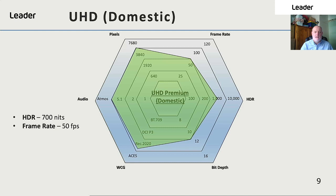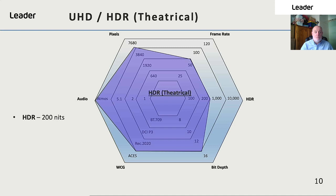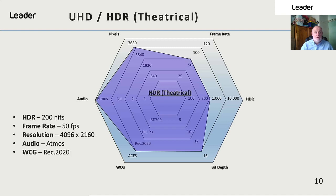When we move to the UHD standards, HDR on average is between 500 and 700 nits, but there are now consumer displays that will go to 1000 nits. We have 50 frames per second, a resolution of 3840 by 2160, audio 5.1, a wider colour gamut of REC 2020 and a 10-bit depth. We also have UHD HDR theatrical, which can go up to 200 nits, a frame rate of 50 frames per second and a resolution of 4096 by 2160. Like HD had 2K, UHD has 4K, and most cinemas displaying 4K images also have Dolby Atmos, REC 2020 colour space and are using a bit depth of 12 bits.